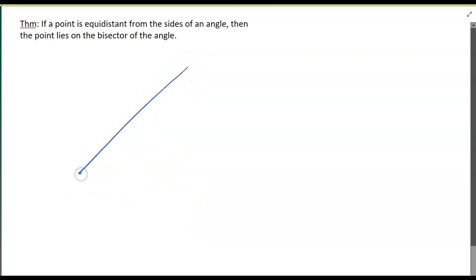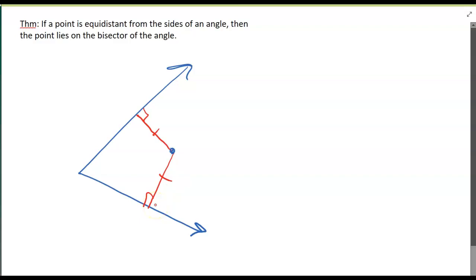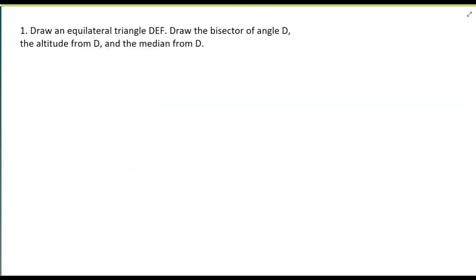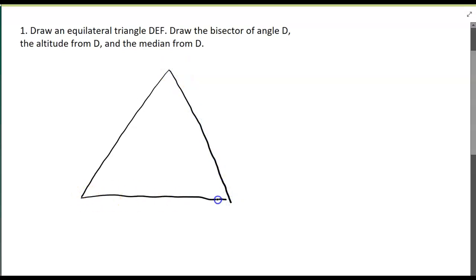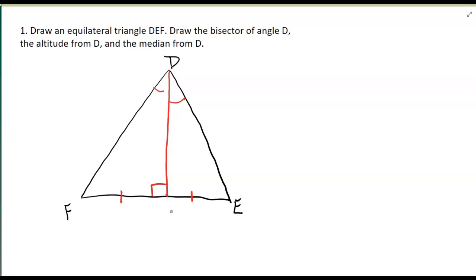And this is simply the converse: if I've got an angle and a point that is equidistant from the sides, then that point has to be on the angle bisector. Now here's an example: draw an equilateral triangle DEF. Draw the bisector of angle D — going right down the middle. The altitude from D? It's the same thing. And the median from D? Also the same thing. So with equilateral triangles, angle bisectors, altitudes, and medians are all the same thing — but that's only true for equilateral triangles.